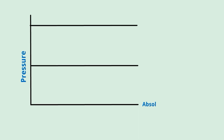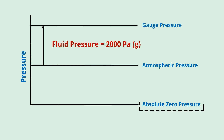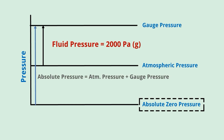Let's solve a simple question. The fluid gauge pressure is 2,000 Pascal — what is the absolute pressure? Absolute pressure means the pressure measured from absolute zero pressure. So absolute pressure = atmospheric pressure + gauge pressure = 101,325 + 2,000 = 103,325 Pascal.